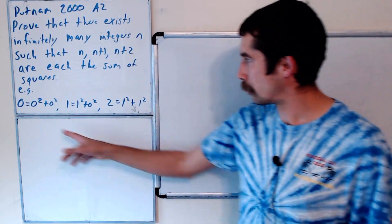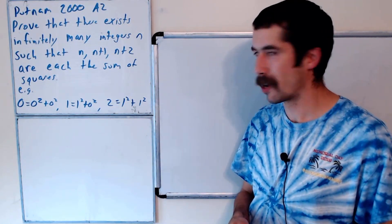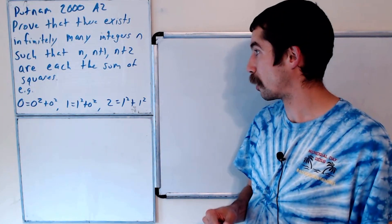And for example, they give us that 0 is equal to 0 squared plus 0 squared, 1 is equal to 1 squared plus 0 squared, and 2 is equal to 1 squared plus 1 squared.